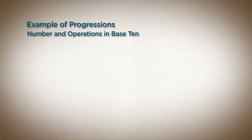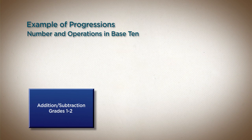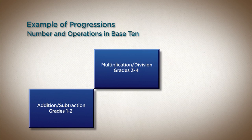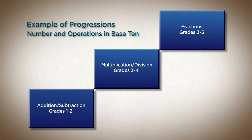For example, there was a progression on number and operations in base 10, which describes how you go from addition and subtraction in grades 1 and 2, to multiplication and division in grades 3 and 4. Then there's a fraction progression, which comes in at grade 3, goes through to grade 5. There's a tie-in there between the number and operations in base 10, the operations and algebraic thinking progressions, and the fractions progression.